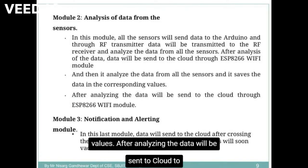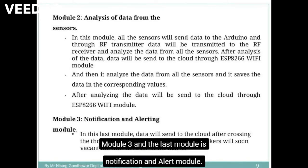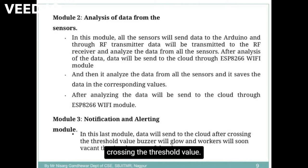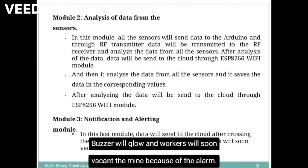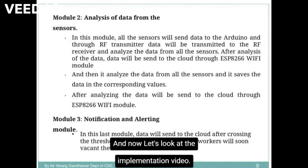After analyzing, the data will be sent to cloud through the ESP8266 Wi-Fi module. The third and last module is the notification and alert module. In this module, when data crosses the threshold value, the buzzer will sound and workers will evacuate the mine because of the alarm. Now let's look at the implementation video.